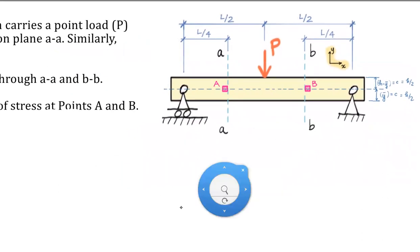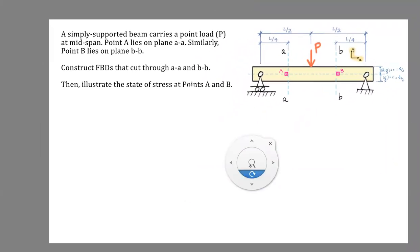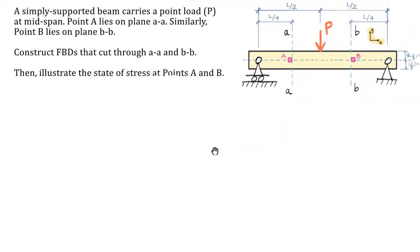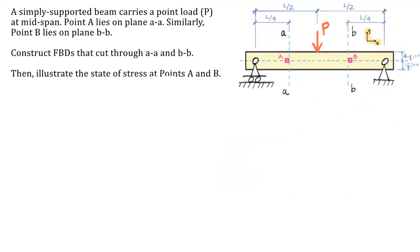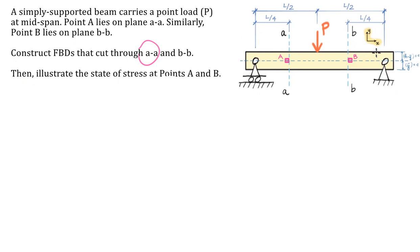Points A and B both line up to that neutral surface. The reason I set the problem up this way is so we can focus on shear stress without having to think about flexural stress due to the bending moment. There are basically two parts to the problem: construct free bodies that cut through these two planes, and then illustrate what's happening at points A and B — to see the relationship between shear force V, shear stress tau, and that tricky sign convention. I'll start with a free body diagram.